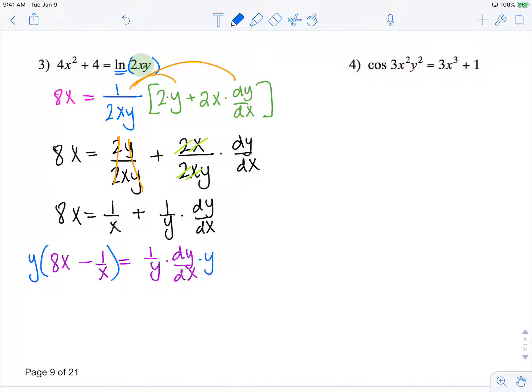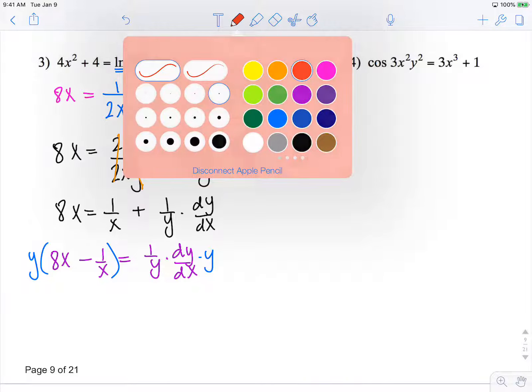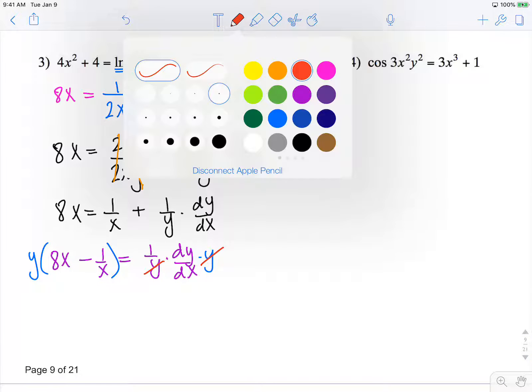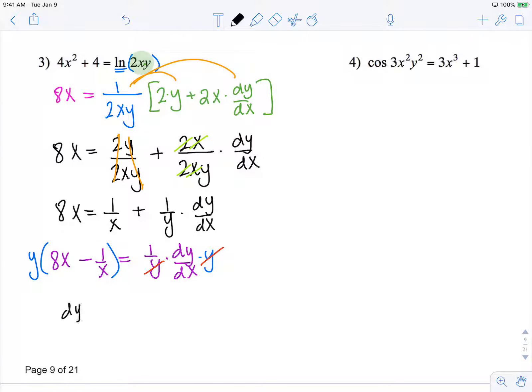on both sides of the equation. These will cancel, so our final answer is dy/dx equals 8xy minus y over x, our implicit derivative.